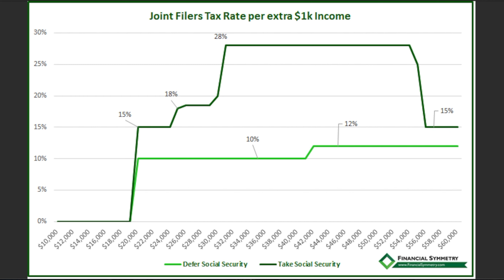We have a graph referenced in this video that shows how the rate steps up through those different calculations. For a married filing jointly situation, there's a similar graph. The thresholds are a bit different — for a single filer the threshold to start including Social Security income is $25,000, while for joint filers it starts at $32,000, giving them a bit more spread before Social Security begins to be taxed. But the bubble effect is very similar.